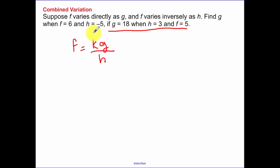They've given me numbers to solve for so I could solve for k. So f is 5, I'm looking for k, g is 18, h is 3, 18 over 3, that is 6. So k is equal to 5 sixths. So our general equation is this: f equals 5 sixths times g over h.